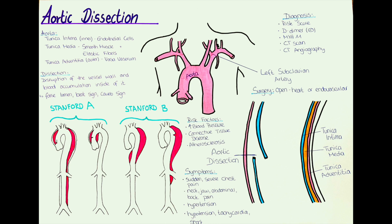MYH11 stands for smooth muscle myosin heavy chain 11, a protein that can indicate that a patient has a hereditary increase of the risk to develop an aortic dissection. Other ways to diagnose an aortic dissection are by imaging techniques. We can use a CT scan or CT angiography for the diagnosis where the dissection can usually be visualized. It is important to not only make a CT scan of the thorax but also of the abdomen and pelvic area, as the dissection may be located further distally.